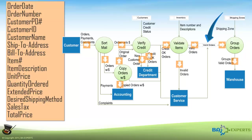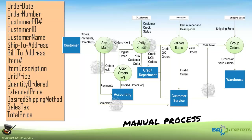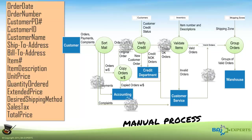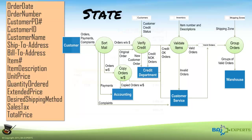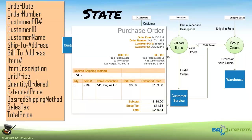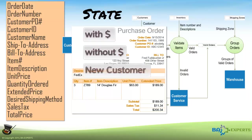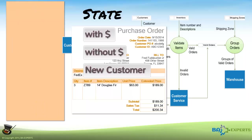Of course, that's primarily because the diagram represents a manual process involving physical order forms being moved from one process to another. There will be additional flow-specific data elements associated with the state the order is in — with payment, without payment, new customer, etc. But this list is my starting point.